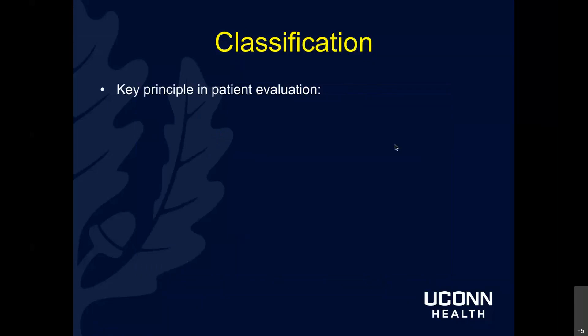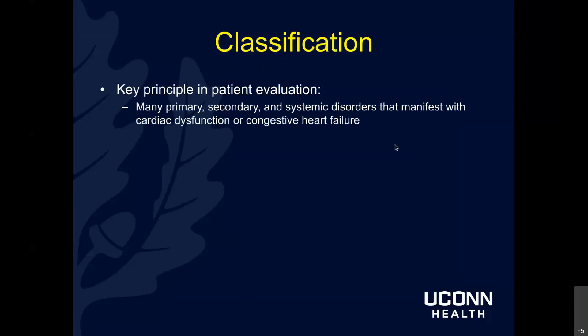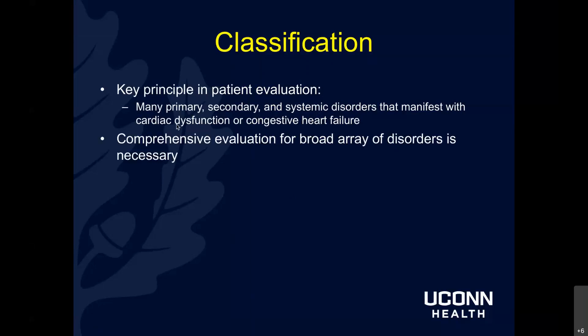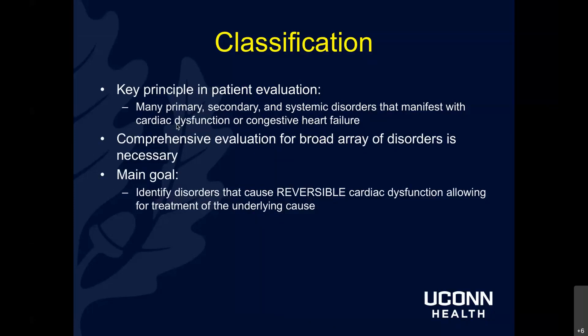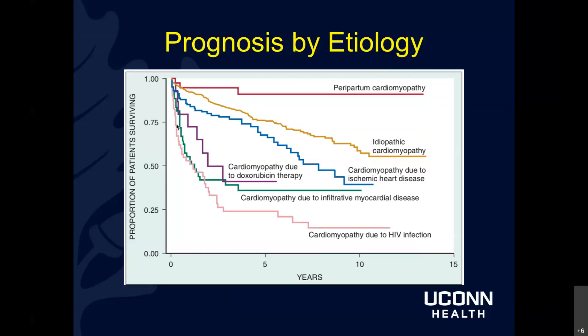The key principle when evaluating a patient with dilated cardiomyopathy is understanding that there are many primary, secondary, and systemic disorders that manifest with cardiac dysfunction or congestive heart failure. You want to undergo a comprehensive evaluation for a broad array of disorders that could potentially be causing the cardiomyopathy. The main goal is identifying disorders that cause reversible cardiac dysfunction so you can treat the underlying cause - even though everything ends in this common pathway of dilated cardiomyopathy, you do have the potential to reverse it.